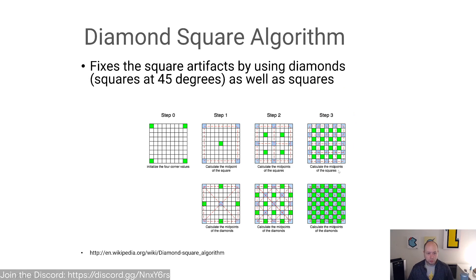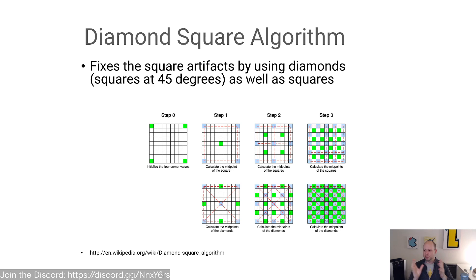The diamond-square algorithm is similar to midpoint displacement but fixes square artifacts by using diamond shapes at 45 degrees. You initialize four corner values, calculate square midpoints, then calculate the midpoints of the resulting diamonds, and so on in a crosshatch pattern. This creates relationships between values — quadrilateral rather than just grid-based — and produces noise that has organic relationships but is still sufficiently random.